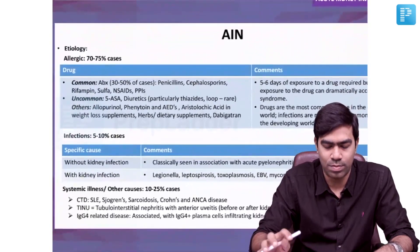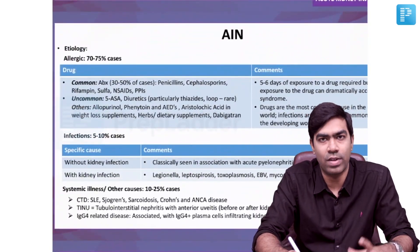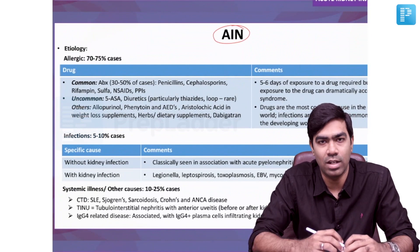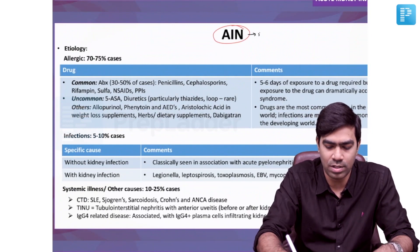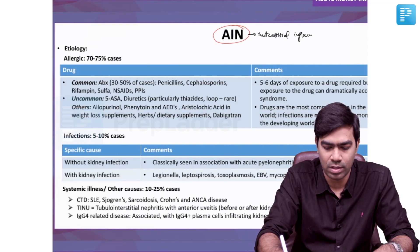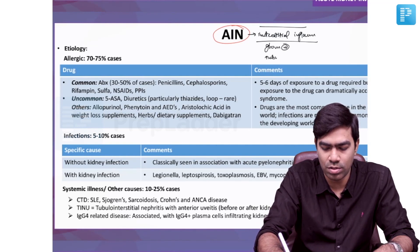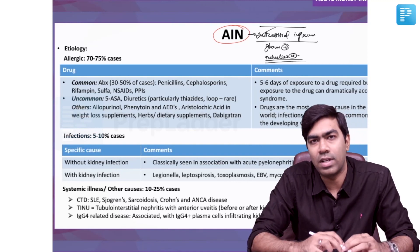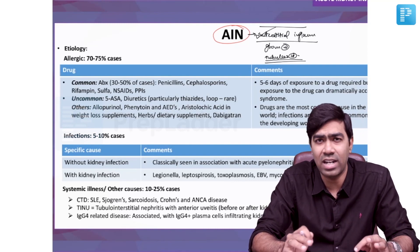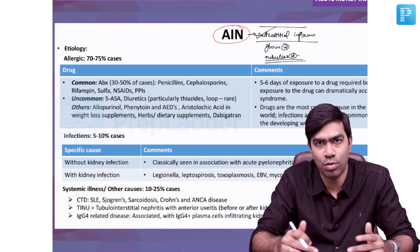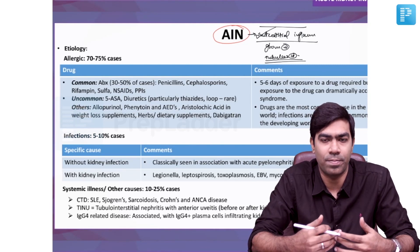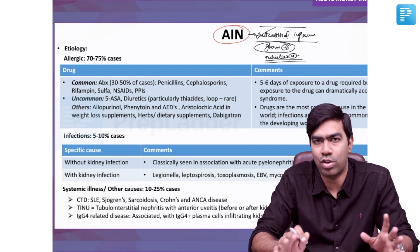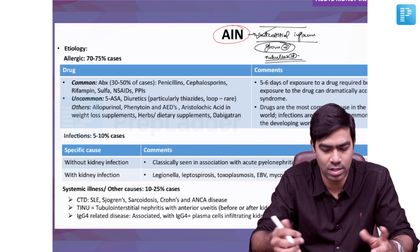Let us move on to the next special type of acute kidney injury that is very commonly asked in exams — that is acute interstitial nephritis. As the name suggests, the patients are going to have interstitial inflammation. Here the glomerulus will be normal, the tubules will be normal. So only the interstitium will have inflammation in a pure acute interstitial nephritis, but you can get tubular interstitial nephritis also. Usually the glomerulus for sure will be normal; if the glomerulus is showing inflammation, that is different.